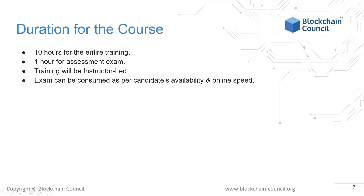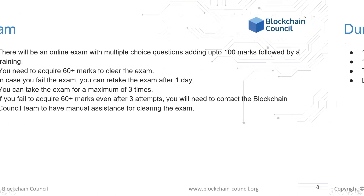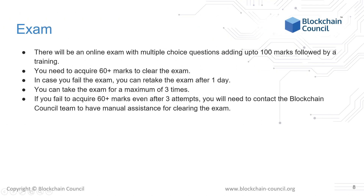There will be around 8 hours of total training, followed by 1 hour for the exam. The exam contains 45 questions and you must cross the minimal threshold to get certified. The exam is out of 100 marks and you need 60 or more marks to pass. If you fail, you can retake the exam after 1 day, and a total of 3 attempts are allowed. Beyond 3 attempts, if you have still not acquired 60-plus marks, you would need to contact the Blockchain Council team for manual assistance.